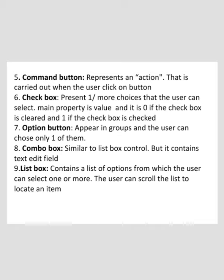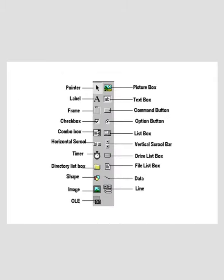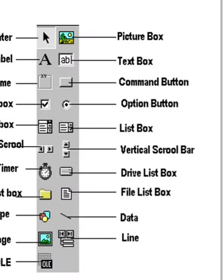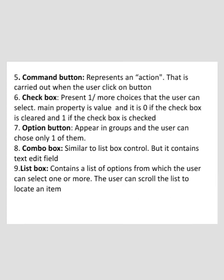The seventh is the Option Button. It appears in groups and the user can choose only one of them. The main property is Checked: it is true if the control is checked and false otherwise.